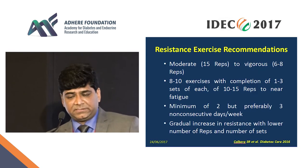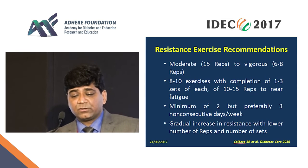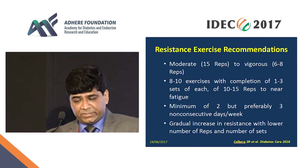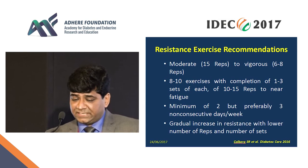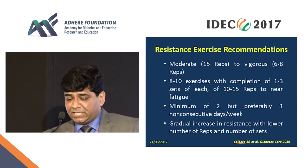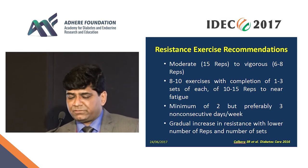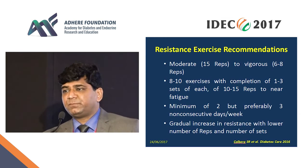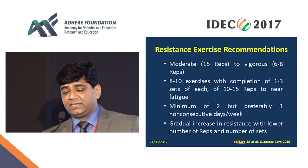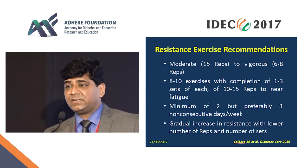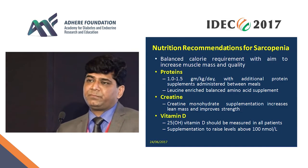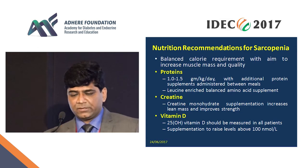Exercise recommendations for sarcopenia: moderate to vigorous resistance exercise should be performed. This includes 3 to 10 exercises with 1 to 3 sets of 10 to 15 repetitions to fatigue. A minimum of 2, but preferably 3, non-consecutive days per week is recommended, with progressive increase in the number of repetitions and sets over time.